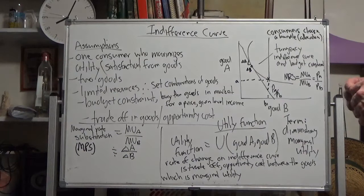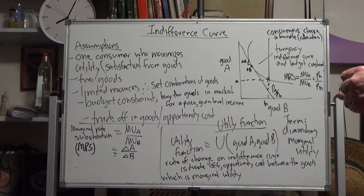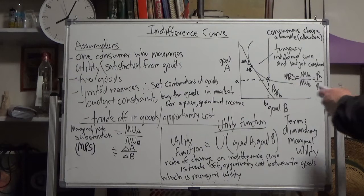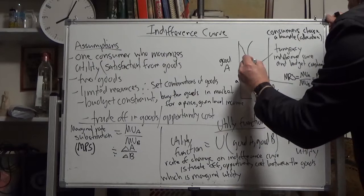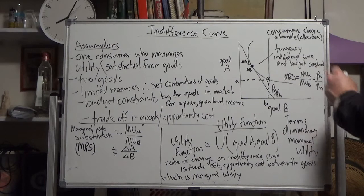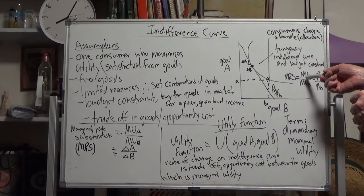Where that tangency is, that partial equilibrium, that's where marginal rate of substitution equals the price ratio, that point there where MRS equals the price ratio, the price of good A over the price of good B. MUA over MUB holds as well because that is MRS.